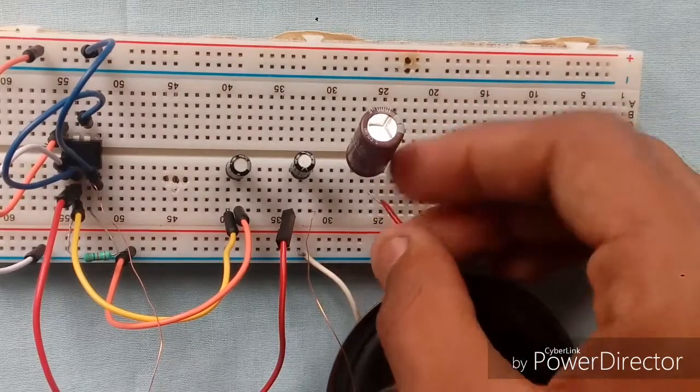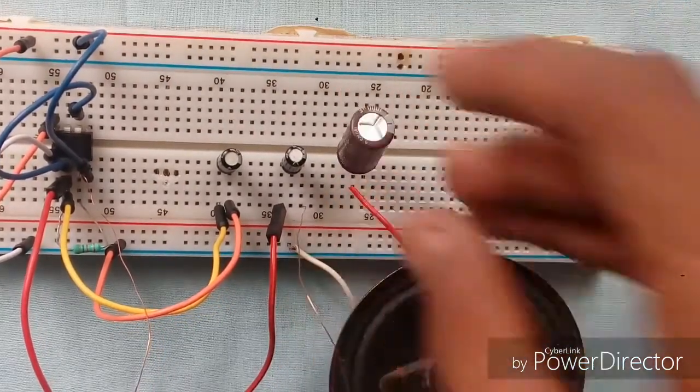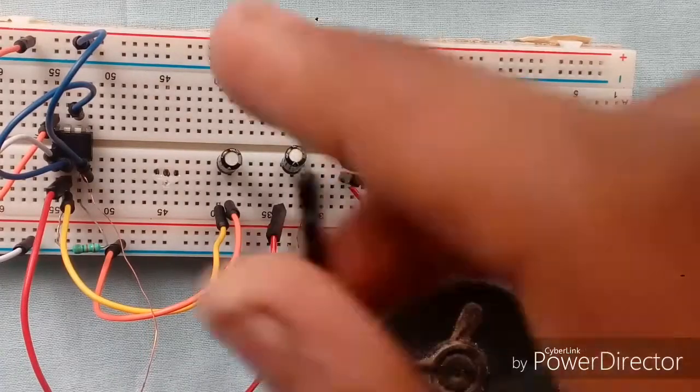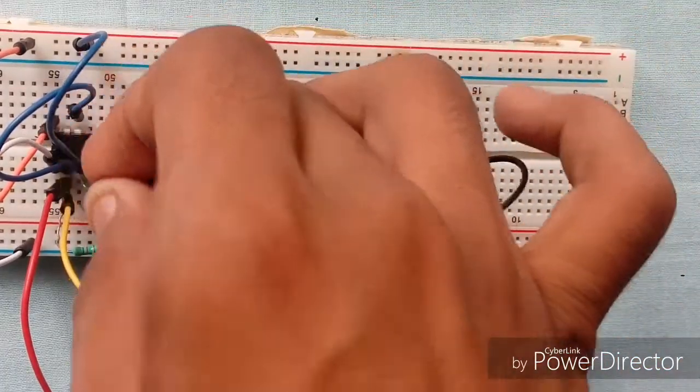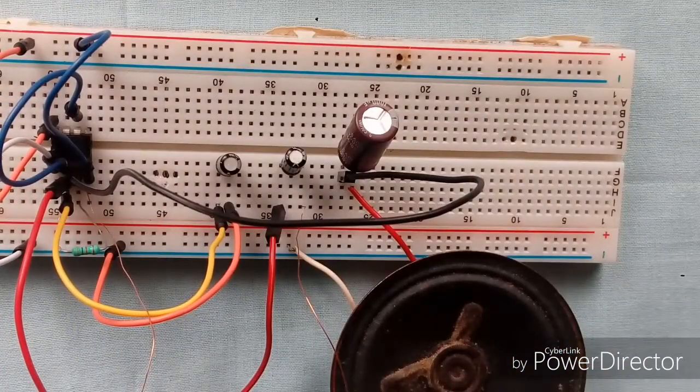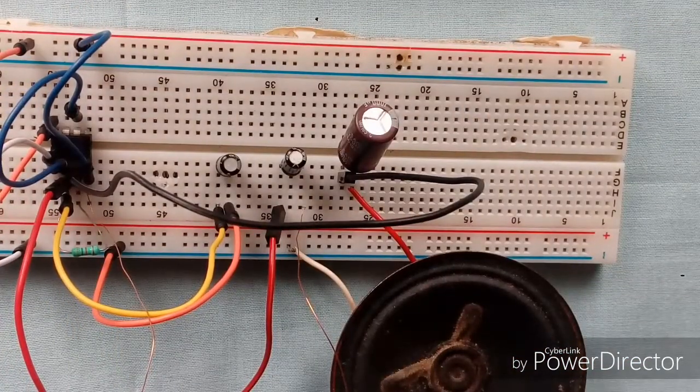Then connect the other side to the negative side of the capacitor to the pin 3 of the IC. And here we are done. The circuit is now complete.